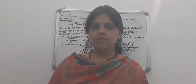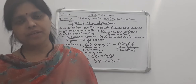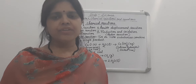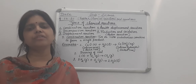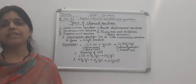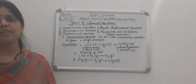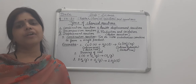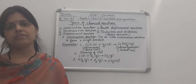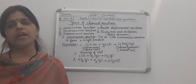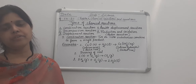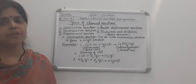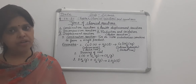In your syllabus there are five types of chemical reactions: combination reaction, decomposition reaction, displacement reaction, double displacement reaction, and redox reaction — that is reduction and oxidation reaction. We will discuss these types of chemical reactions one by one.